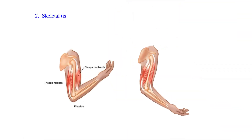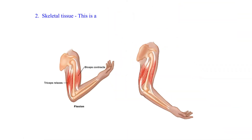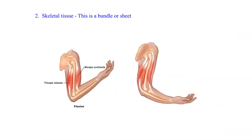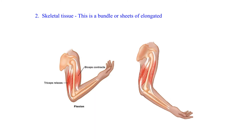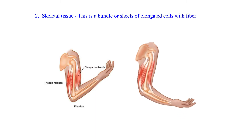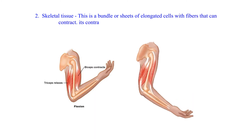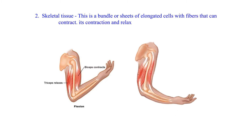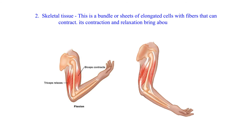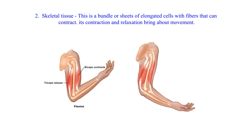2. Skeletal Tissue: This is a bundle or sheets of elongated cells with fibers that can contract. Its contraction and relaxation bring about movement.